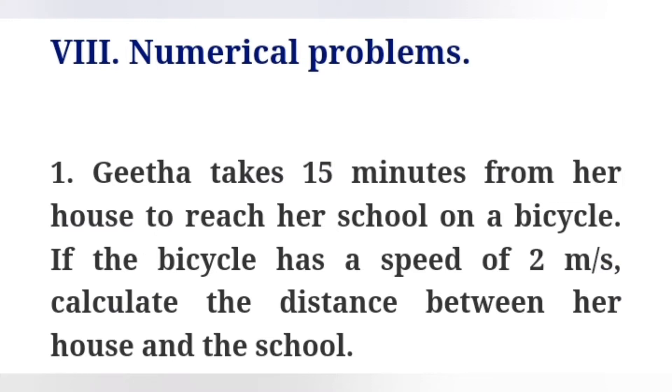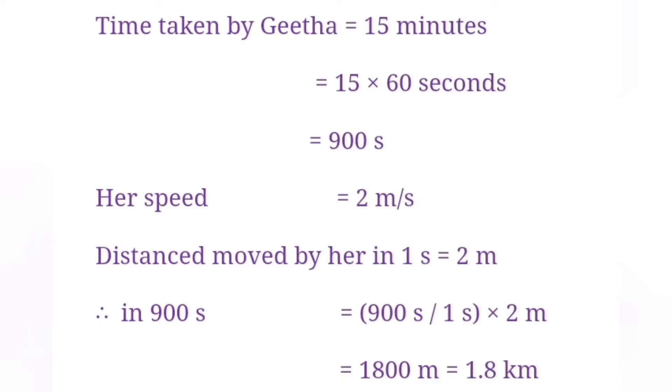Eighth Roman letter: Numerical problems. First one: Geetha takes 15 minutes from her house to reach her school on a bicycle. If the bicycle has a speed of 2 m/s, calculate the distance between her house and the school. Time taken by Geetha = 15 minutes = 15 × 60 seconds = 900 seconds. Her speed = 2 m/s. Distance moved by her in 1 second = 2 meter. Therefore, in 900 seconds = 900 seconds / 1 second × 2 meter = 1800 meter = 1.8 kilometer.